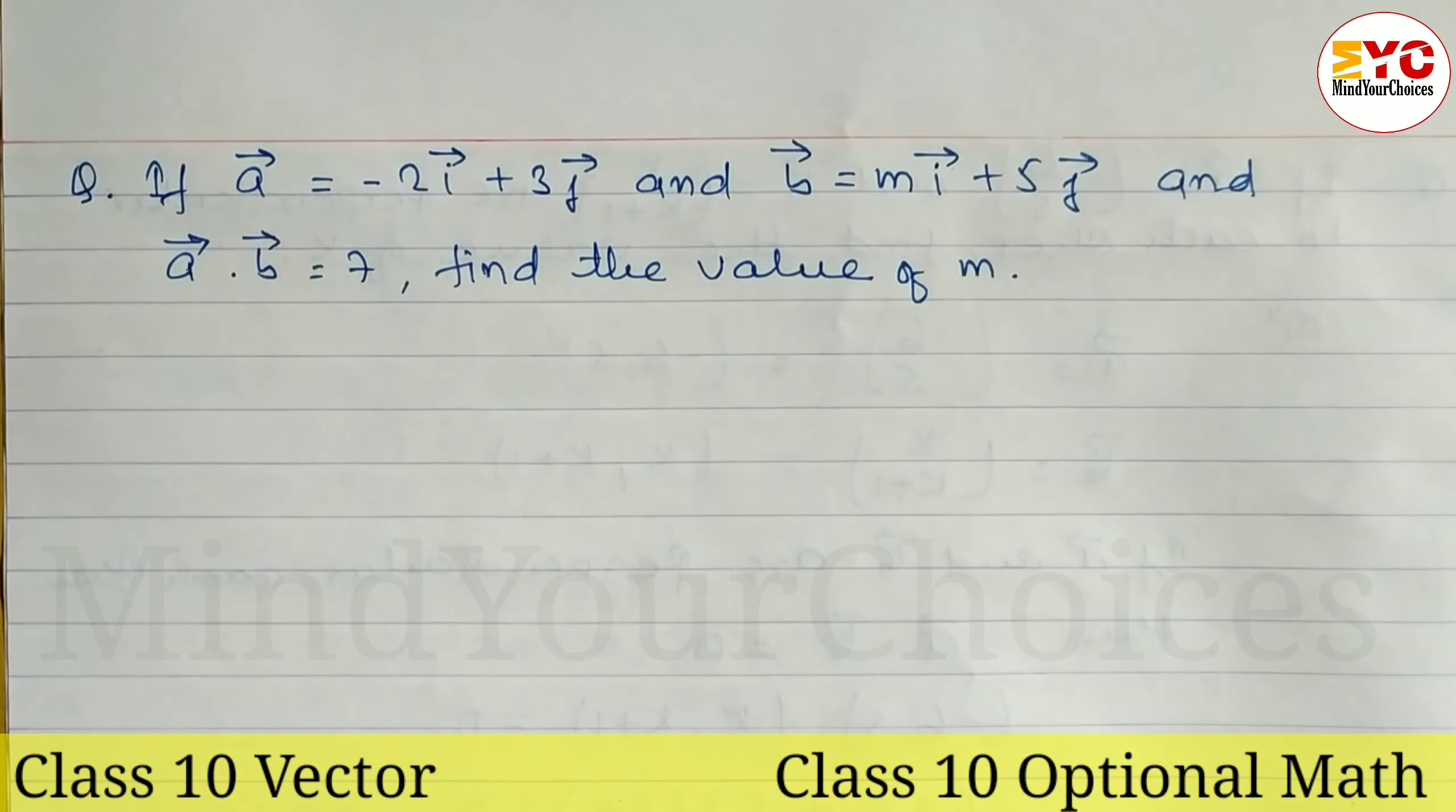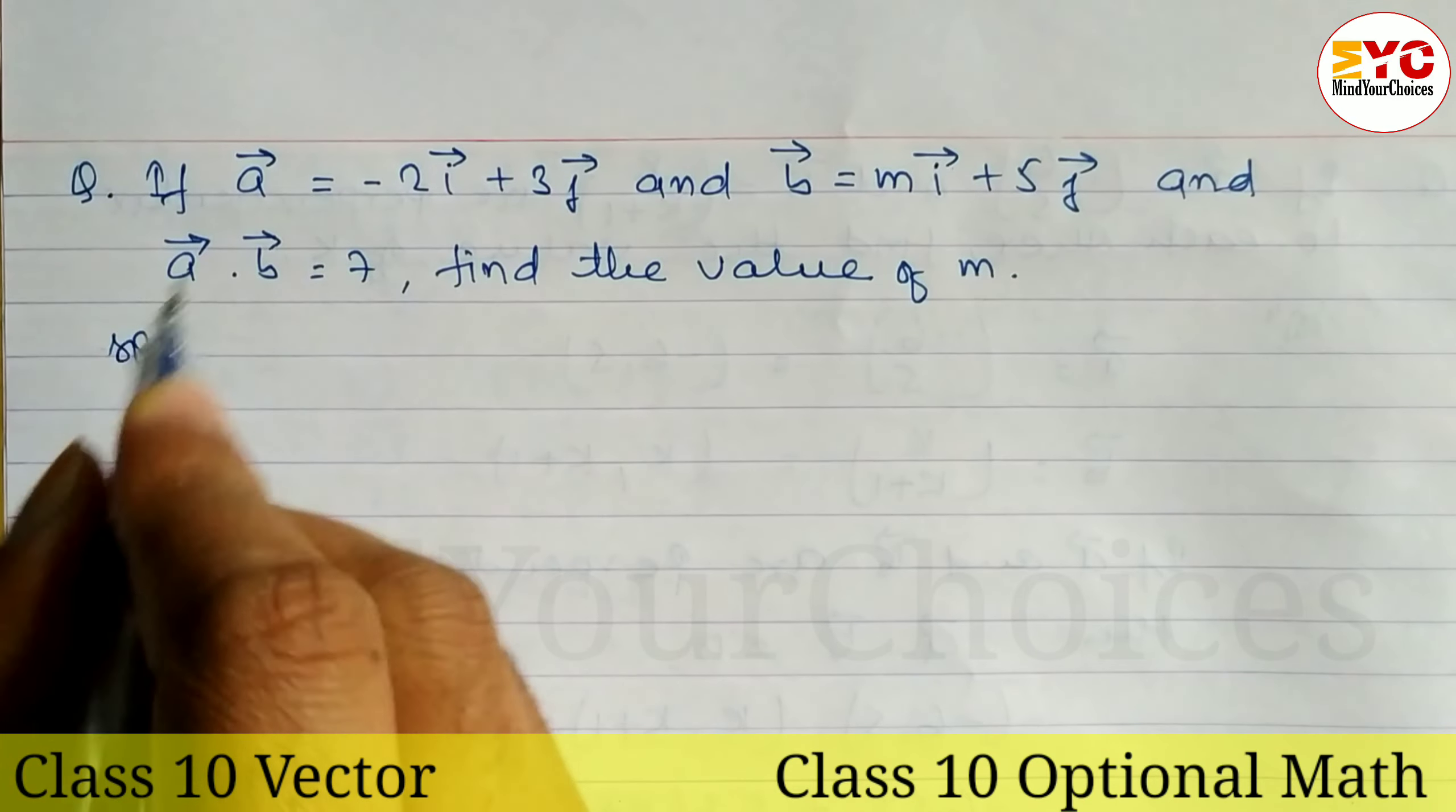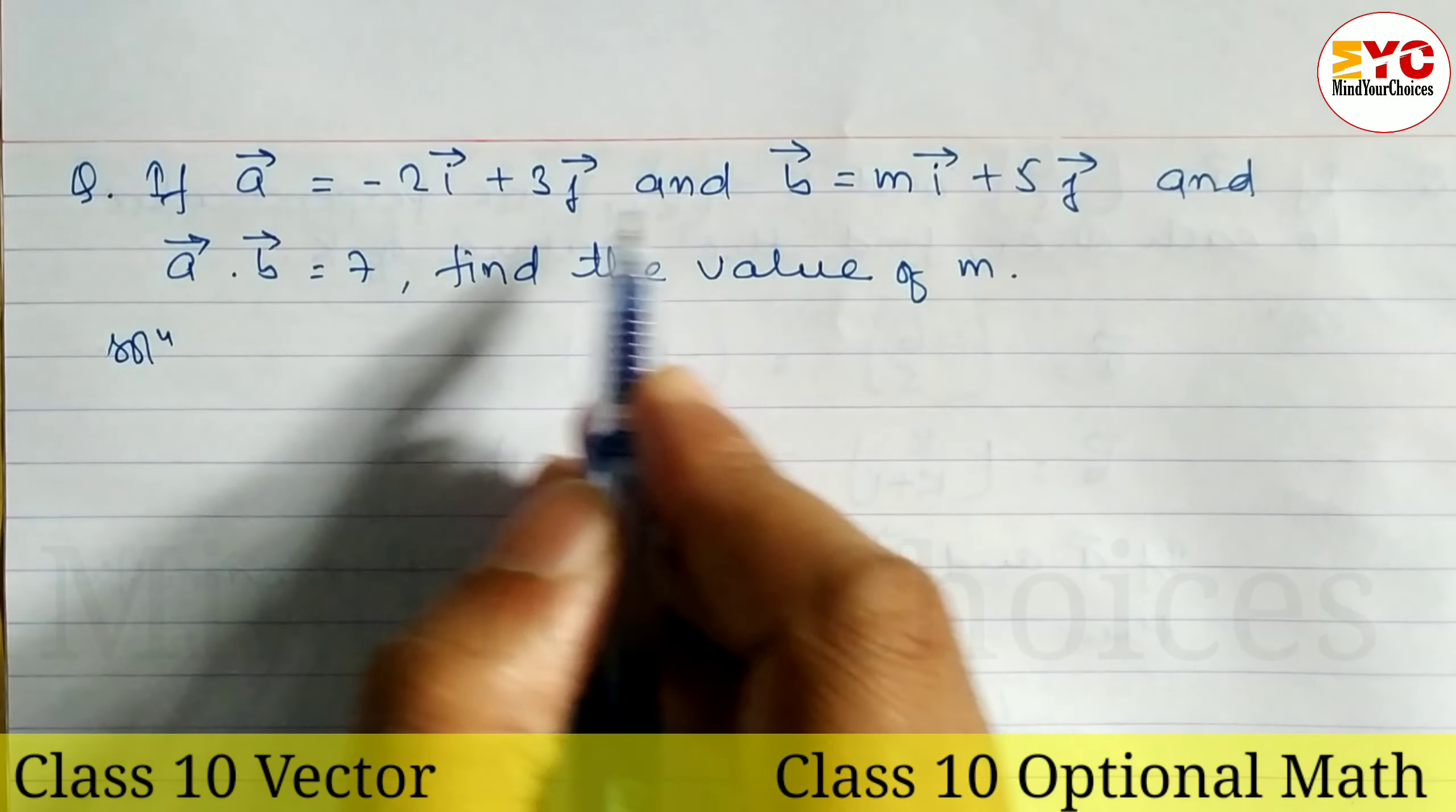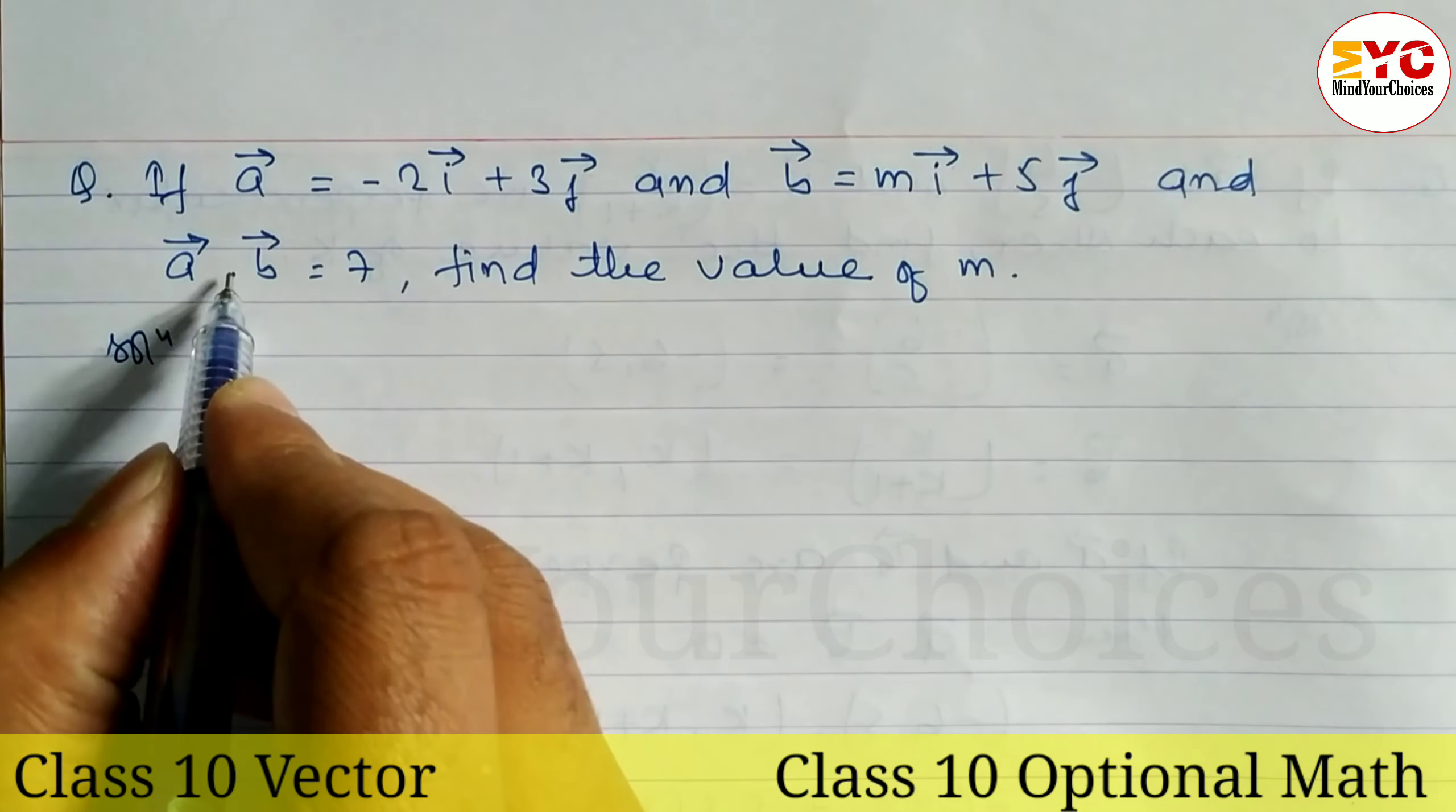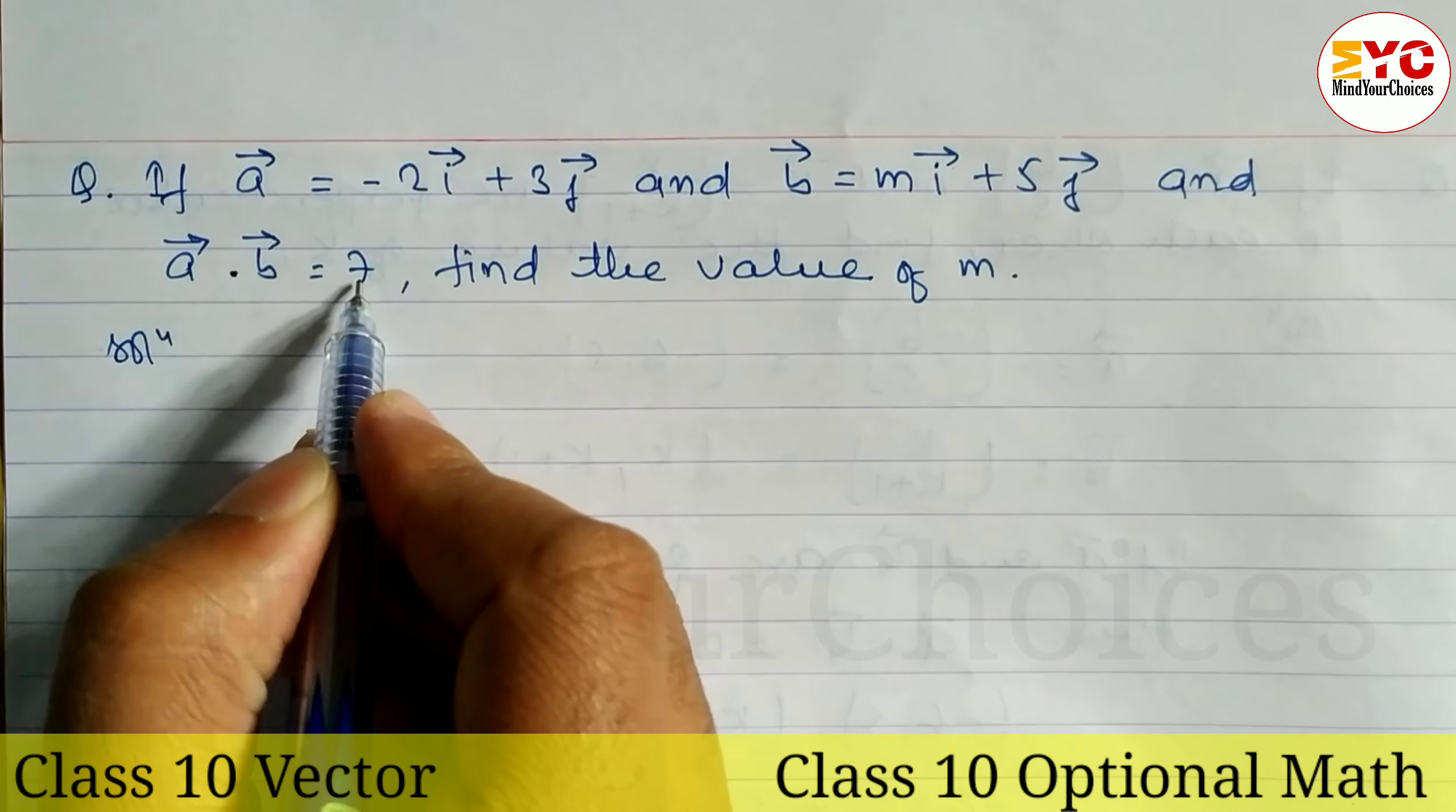This is a Class 10 vector question. Given: a⃗ = -2i⃗ + 3j⃗ and b⃗ = mi⃗ + 5j⃗, and the scalar product a⃗·b⃗ = 7. Find the value of m.